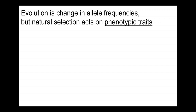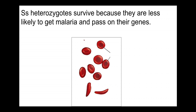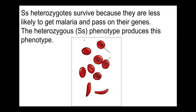Again, evolution is a change in allele frequencies. When natural selection acts on sickle cell anemia, it is acting on the phenotype of the red blood cells, not the underlying genotype and alleles — the big S and the little s. The heterozygote doesn't survive because of a particular genotype; it's not the DNA that's interacting with the parasite. They survive because they have a phenotype which is less likely to get malaria, and therefore more likely to pass their genes on. It is the heterozygous genotype that produces this phenotype.